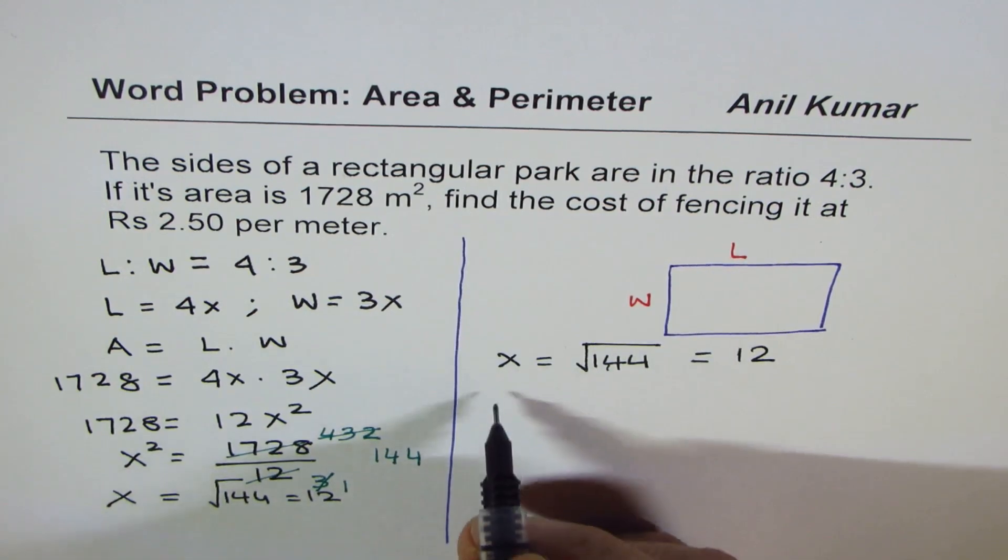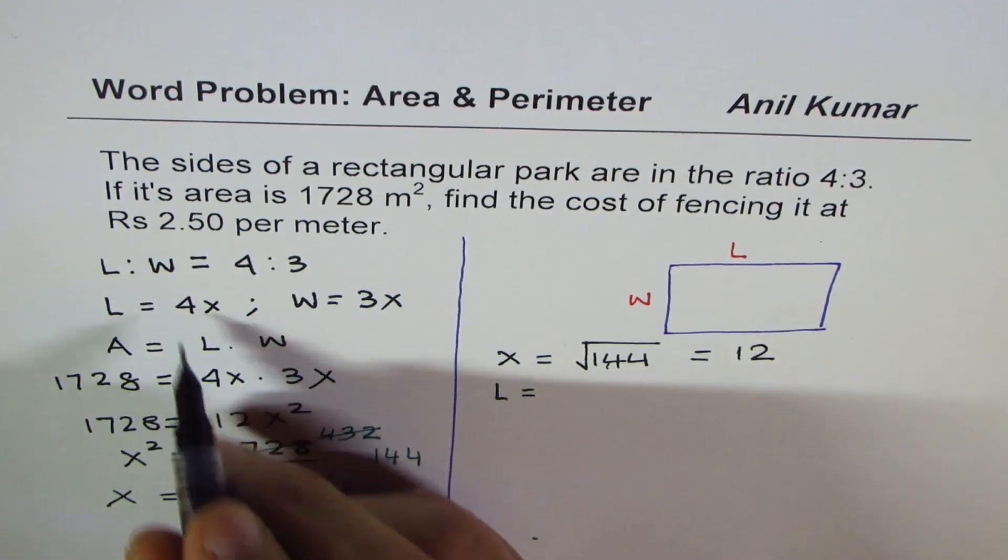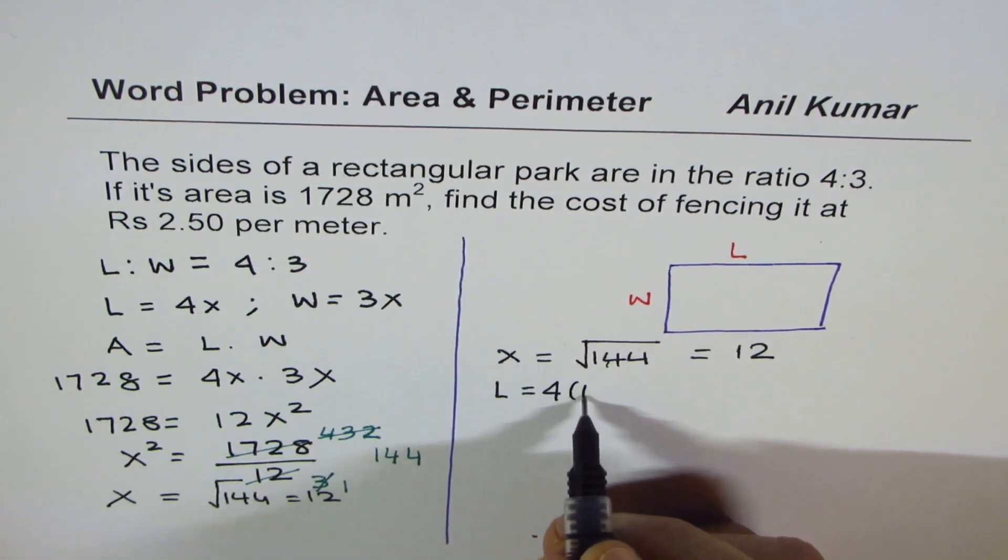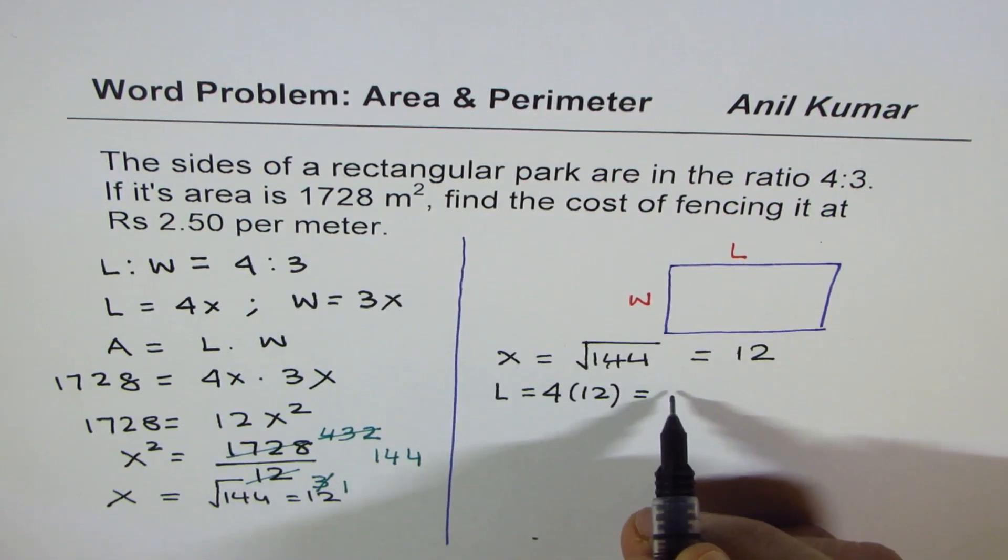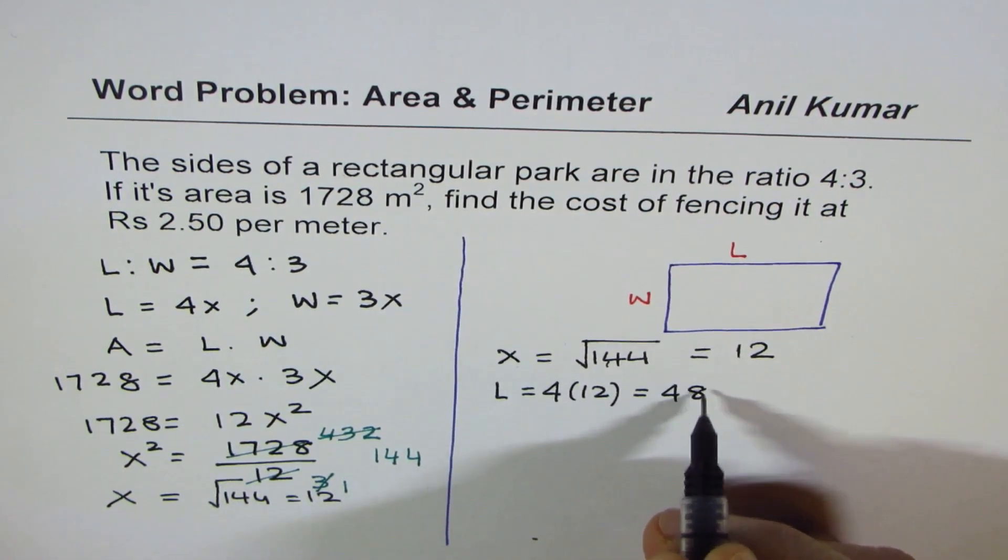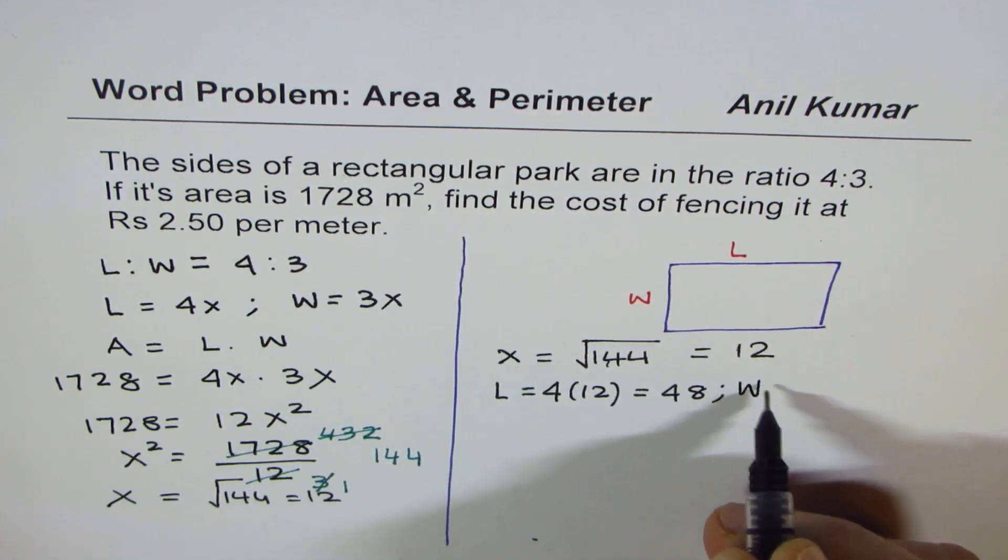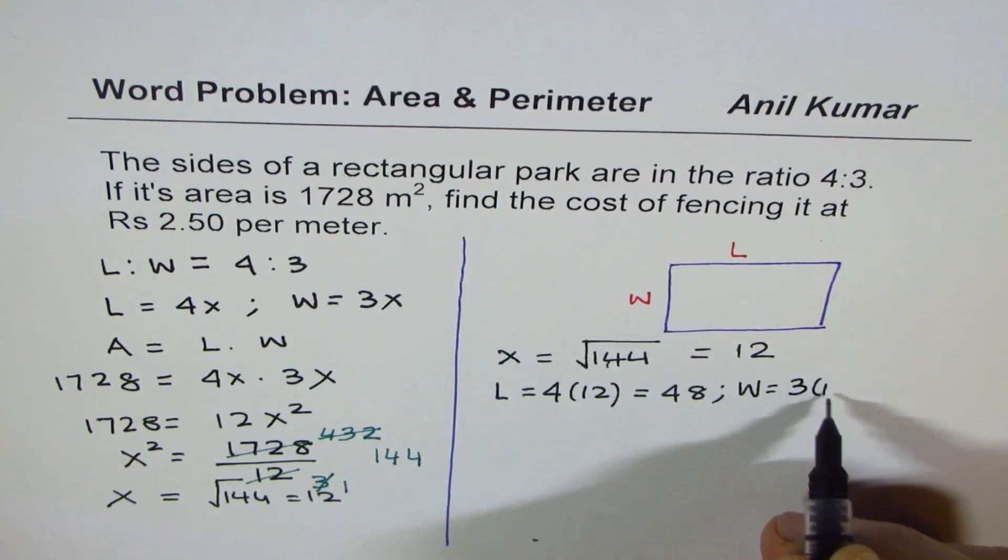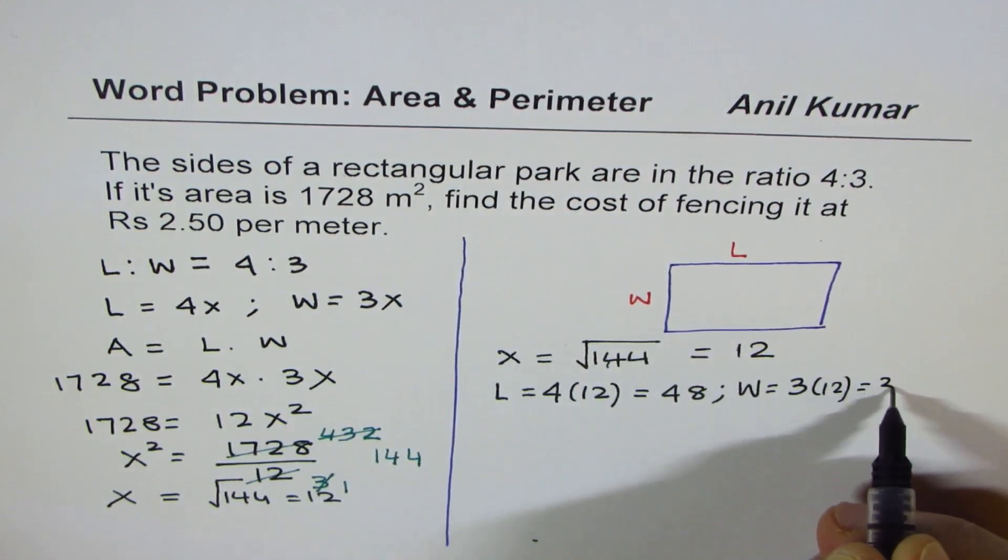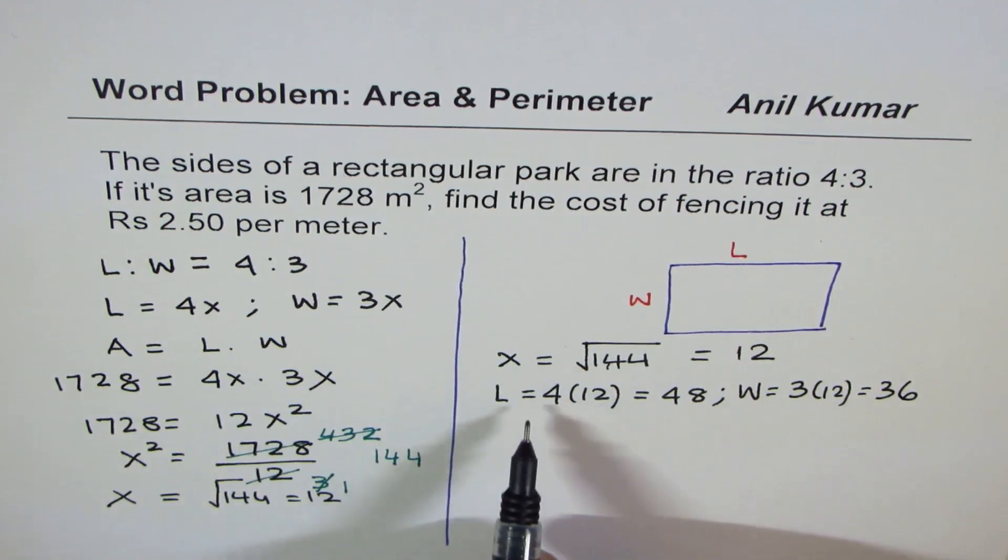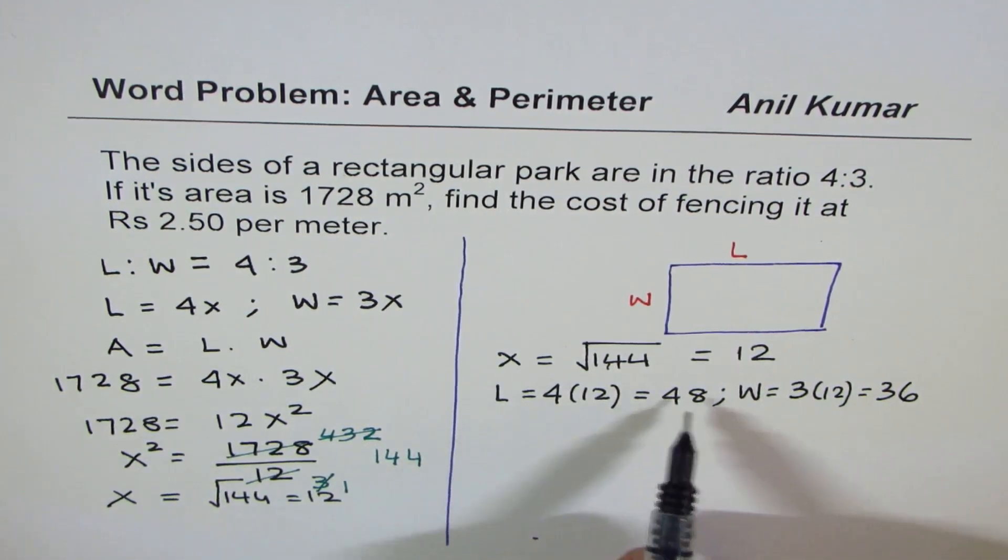If x is 12, then length is equal to 4 times 12, which is 48, and width is equal to 3 times 12, which is 36. Now we know length and width. If we know length and width, we can find perimeter.